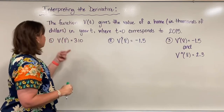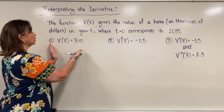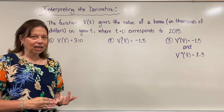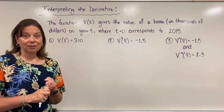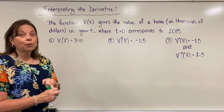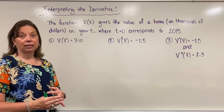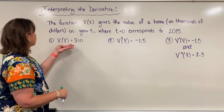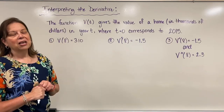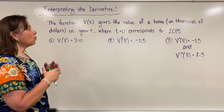So in light of that, check out this notation. This is actually not calculus notation — you would have seen this in a college algebra or pre-calculus class — but it's really important to be able to wrap your mind around function notation even in calculus. So here we have V of 8 equals 310. What could this possibly mean?